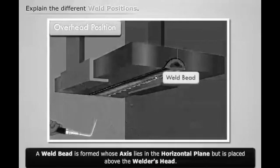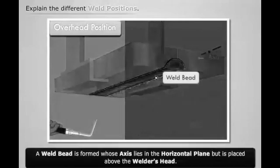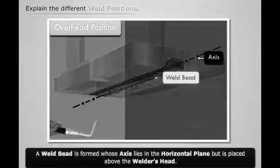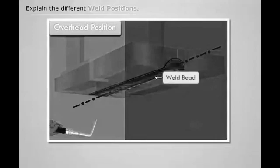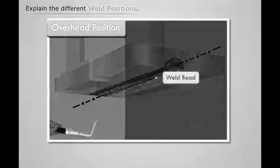We see that a weld bead is formed whose axis lies in the horizontal plane, but it is placed above the welder's head. Thus we have a weld bead whose alignment is overhead.